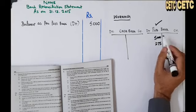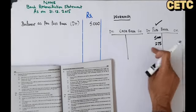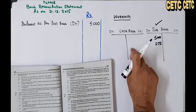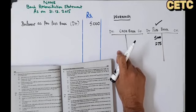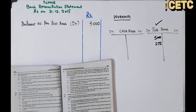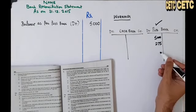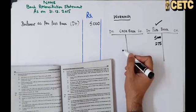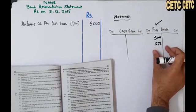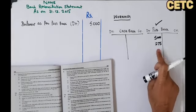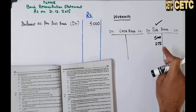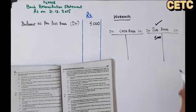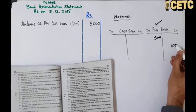یہ چیز صرف passbook میں ہوئی ہے، cash book میں نہیں ہوئی۔ اگر passbook میں debit تھی تو cash book میں credit ہونی تھی لیکن نہیں ہوئی — یہ book ہمارے control میں نہیں، customer کے پاس ہے۔ جو چیز دوسرے کے پاس ہوئی وہ ہمارے پاس نظر نہیں آ رہی، تو ہم اپنے پاس reverse کر لیں گے۔ یہ 275 passbook میں debit ہے، تو ہم اسے credit side پہ لکھ دیں گے — 275۔